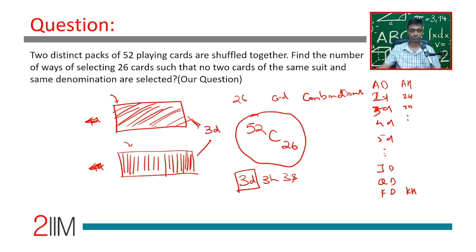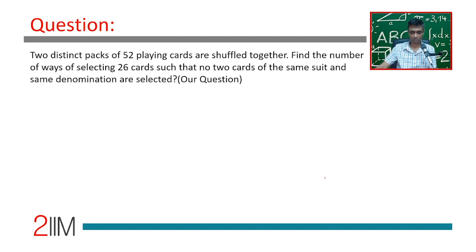Or this pack? I could select from this or this. There are two ways of selecting three of diamonds, two ways of selecting three of hearts, two ways of selecting three of spades. There's a king of hearts involved—two ways of selecting that. For each of the 26 cards, there are two options. We're thinking about 52C26 for selecting card combinations...